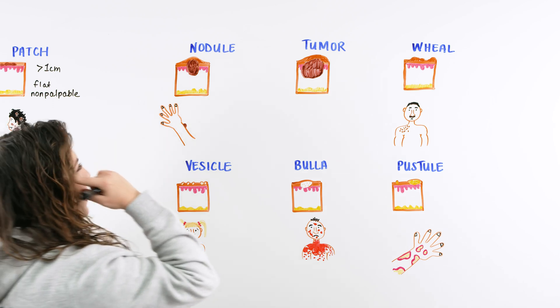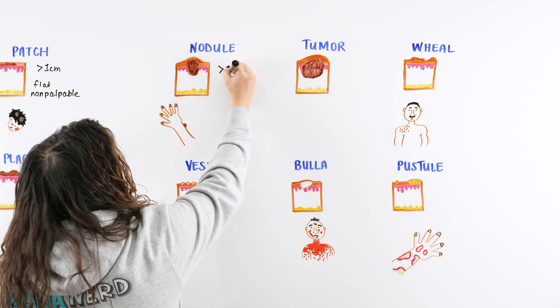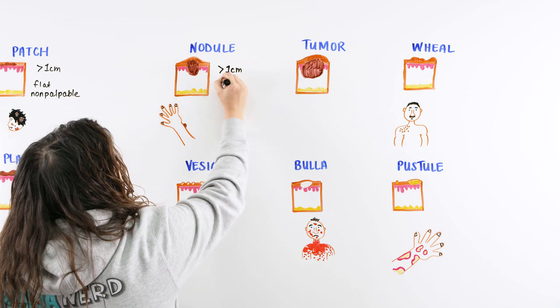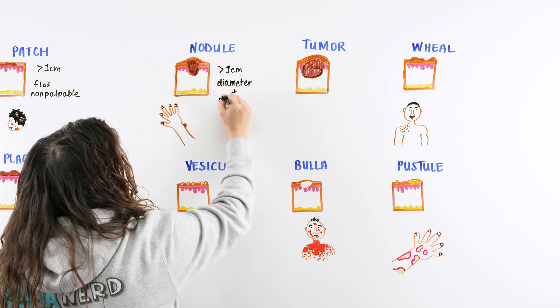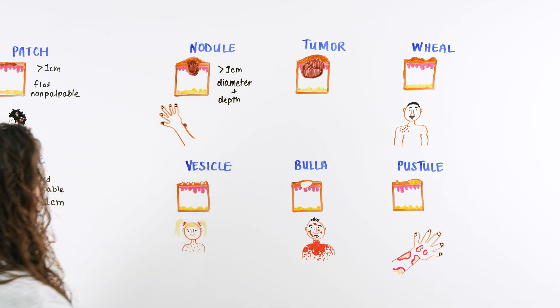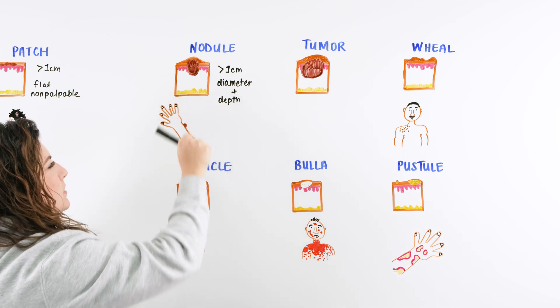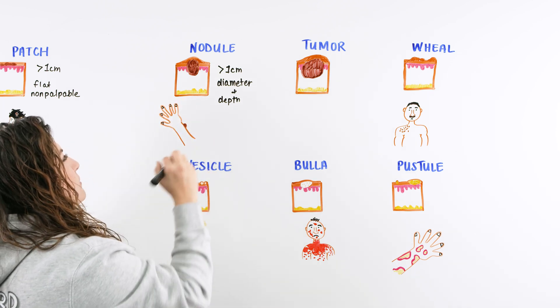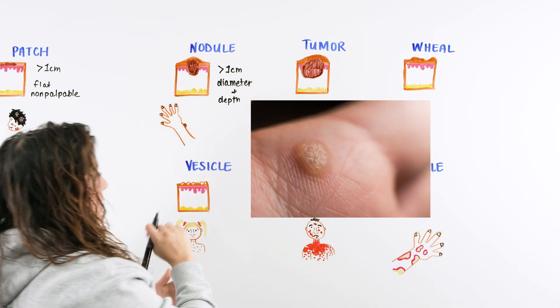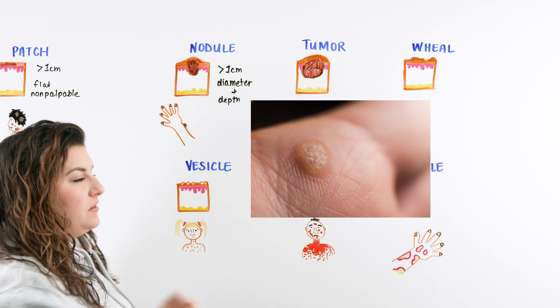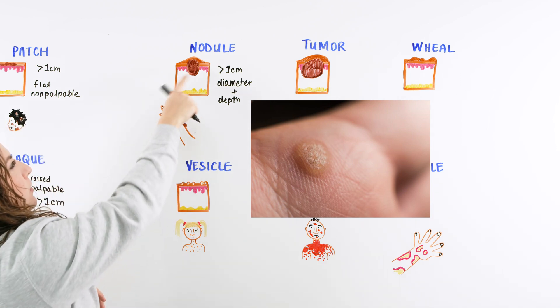Let's talk about nodule now. The nodule is typically around one centimeter in diameter and depth. You're probably thinking, well, how is that different than what we were looking at before when we were talking about our plaque? When we're talking about this, it's because it's deeper. The nodule is going to be a little deeper. It's going to extend lower into the skin. An example of a nodule could be like a wart. If someone has a wart like on the side of their wrist here, it can also be skin colored.